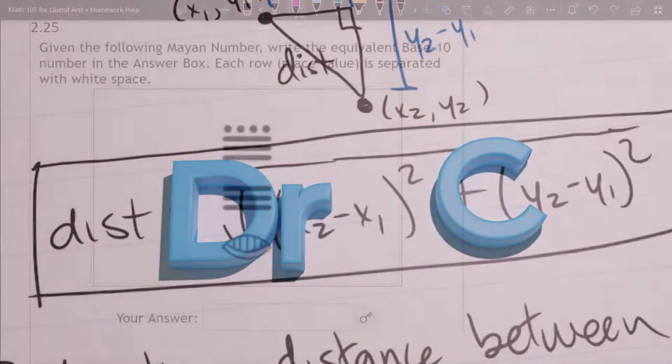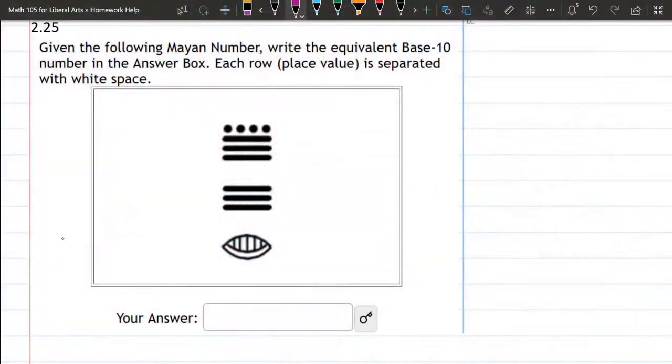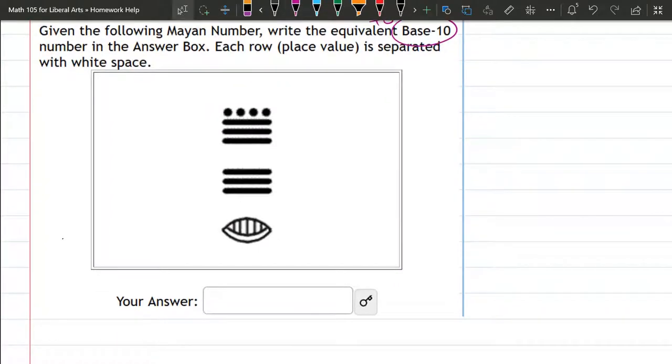We have a Mayan number here written out in Mayan symbols, and we want to convert to base 10. This is written with the biggest on the top, medium, and smallest.